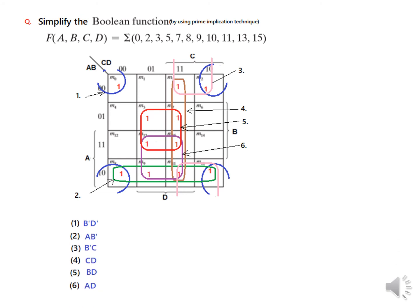Now write their values. Number one is B-dash D-dash — the last zeros are common giving B-dash, and again D-dash from the columns. Number two is written similarly. Number three is A B-dash, since A and B-dash are common across those cells. So we write all six possibilities.